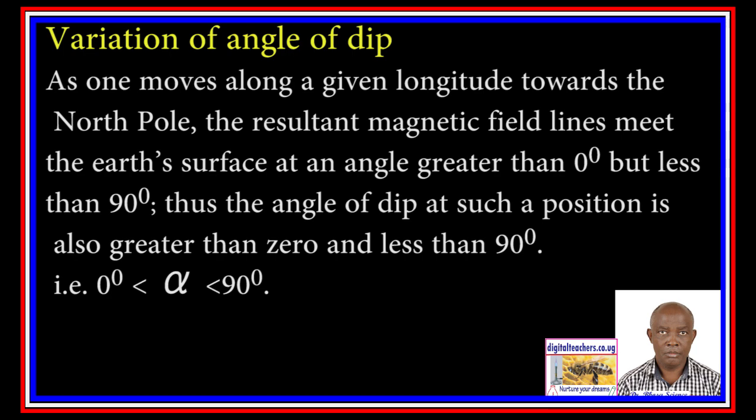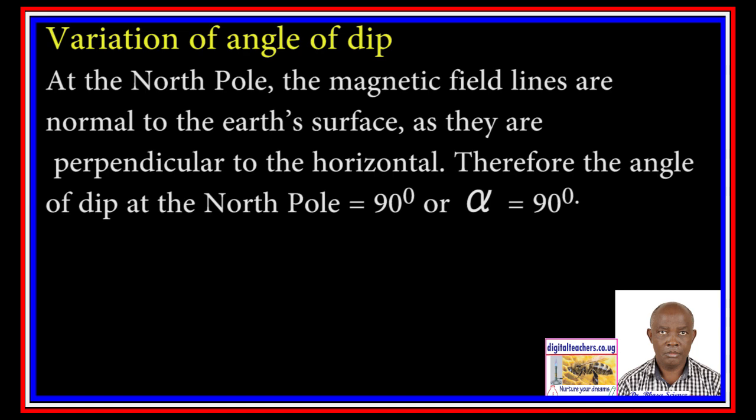As one moves along a given longitude towards the north pole, the resultant magnetic field lines meet the earth's surface at an angle greater than zero, but less than 90 degrees. Thus, the angle of dip at such a position is also greater than zero and less than 90 degrees, i.e. zero degrees less than alpha less than 90 degrees. At the north pole, the magnetic field lines are normal to the earth's surface, perpendicular to the horizontal. Therefore, the angle of dip at the north pole is equal to 90 degrees, or alpha equals 90 degrees.